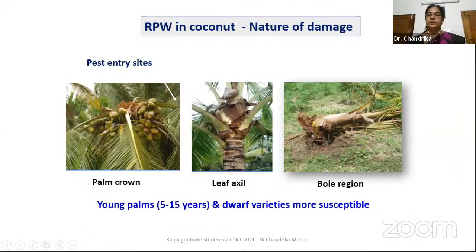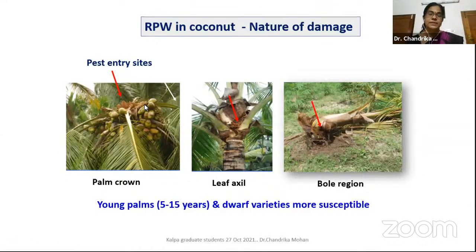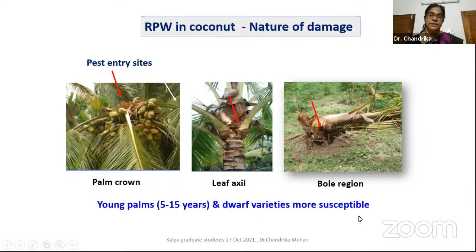How does the red palm weevil attack coconut? There are mainly three pest entry sites noticed in the field: one is through the palm crown region, second is through the leaf axil, and third is through the bole region. Bole region entry is mainly in hybrids and dwarf varieties of coconut. Leaf axil damage is mainly through rhinoceros beetle-attacked sites. Palm crown entry is mainly through rottings or bud rot disease-induced pest entry sites.